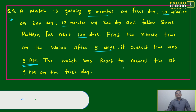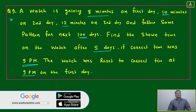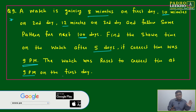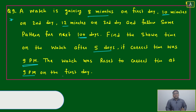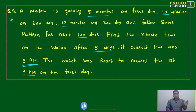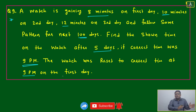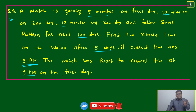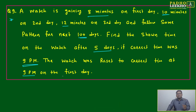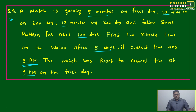The watch has reset to the correct time at 9 p.m. on the first day. This means it is not in a slow condition. Many other times we solve questions where the watch is in a slow condition and keeps gaining from that position, but here at 9 p.m. on the first day — when our calculation is starting — it has reset, meaning it is showing the correct 9 p.m.